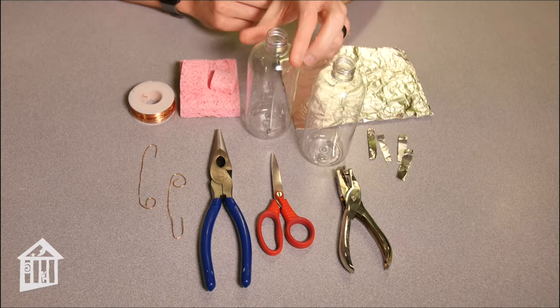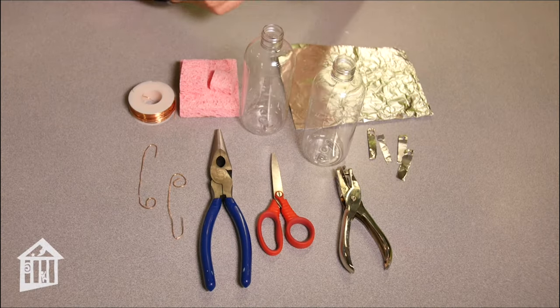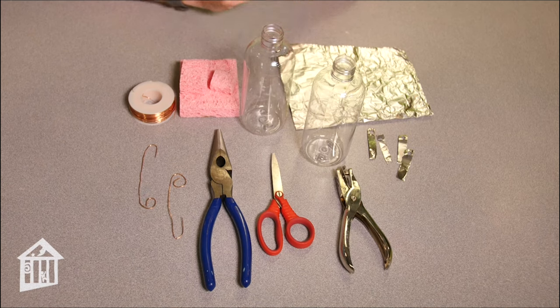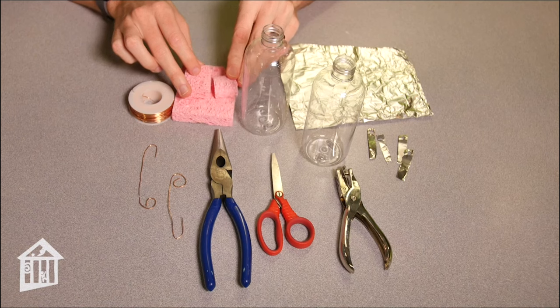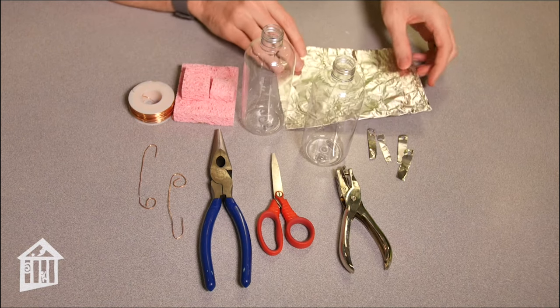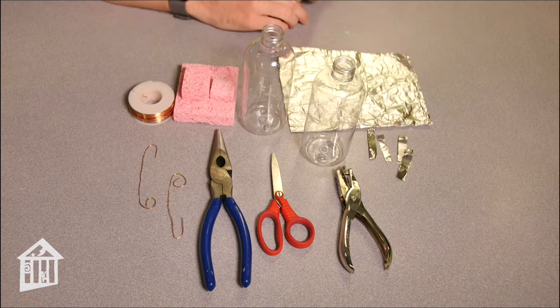To build your electroscope, you need a plastic bottle or a glass bottle will work also. You'll need a sponge that you'll eventually cut into smaller pieces. Aluminum foil that you'll eventually cut into smaller pieces.